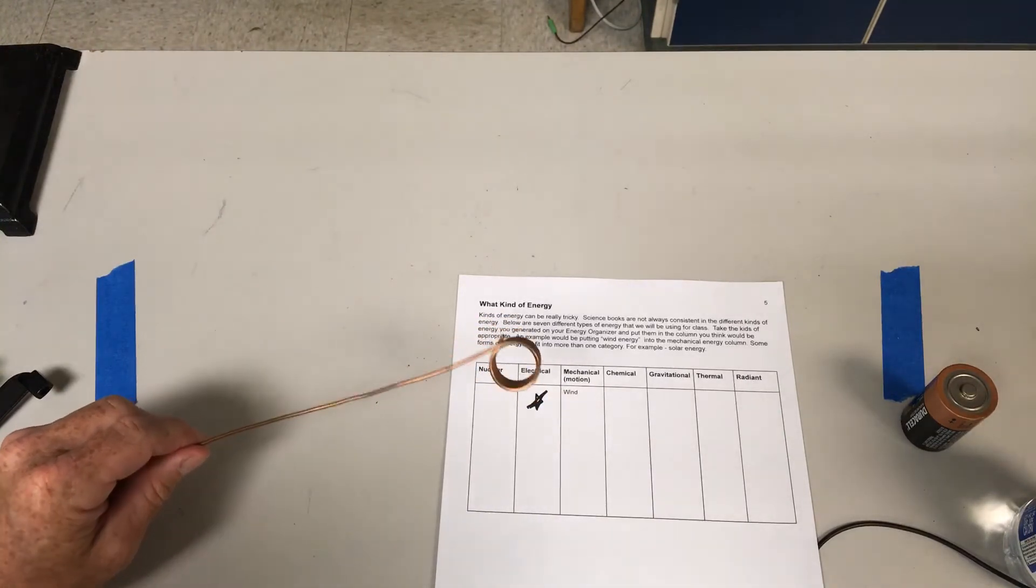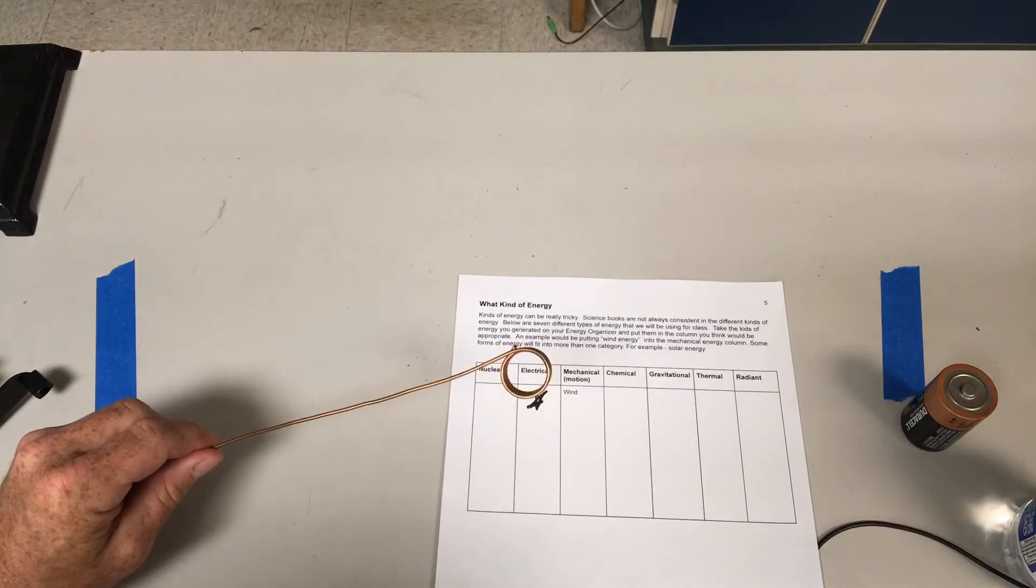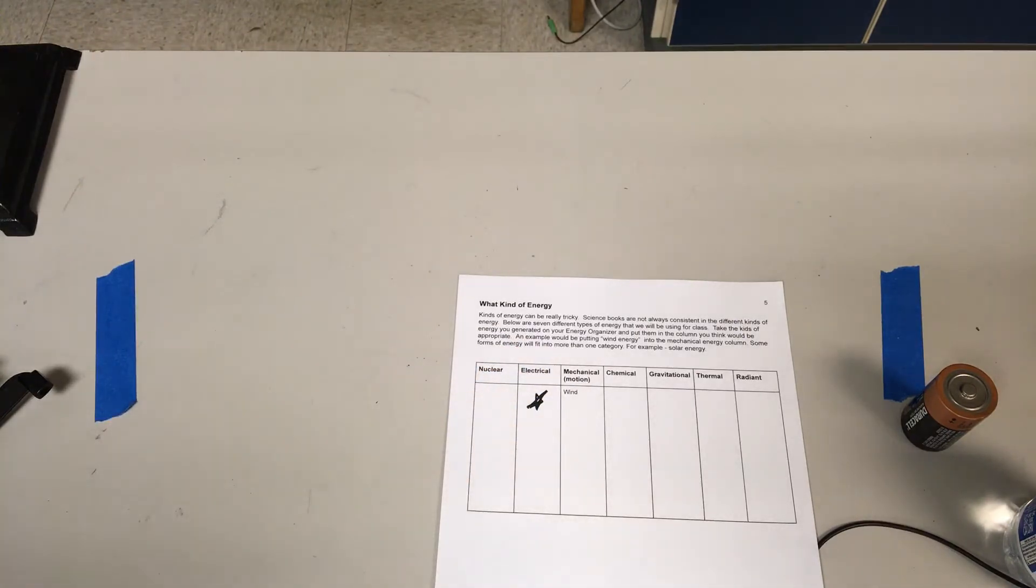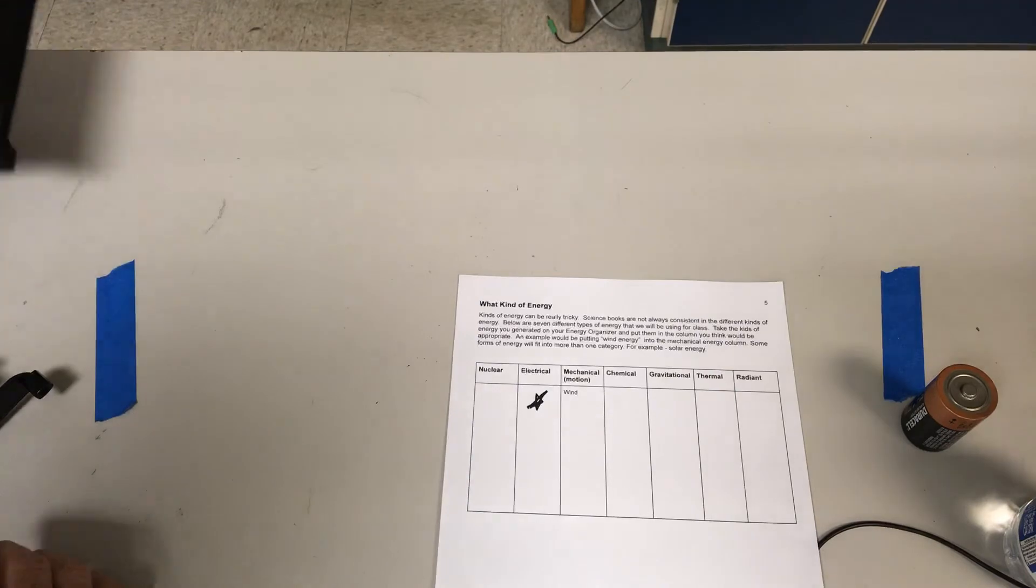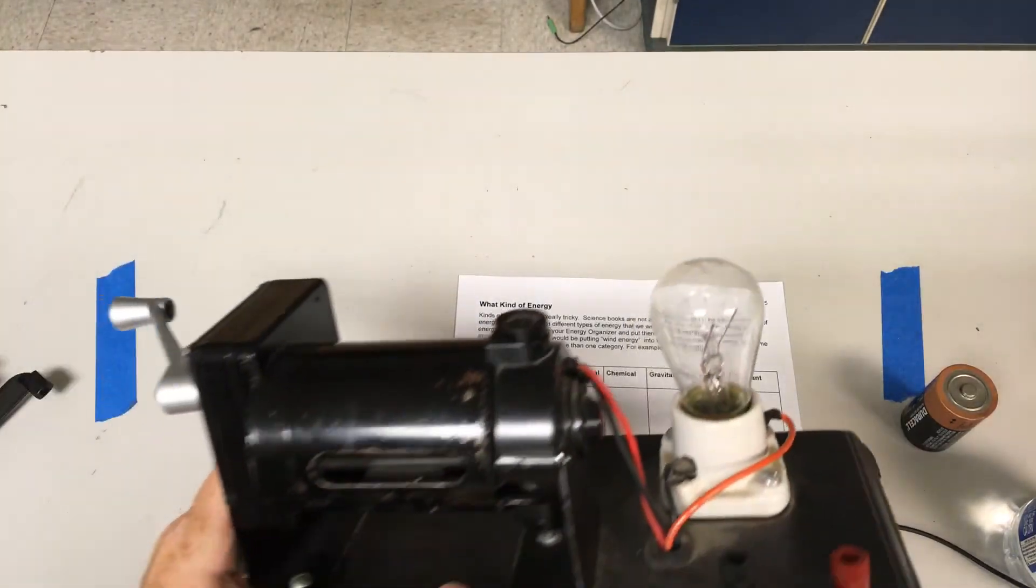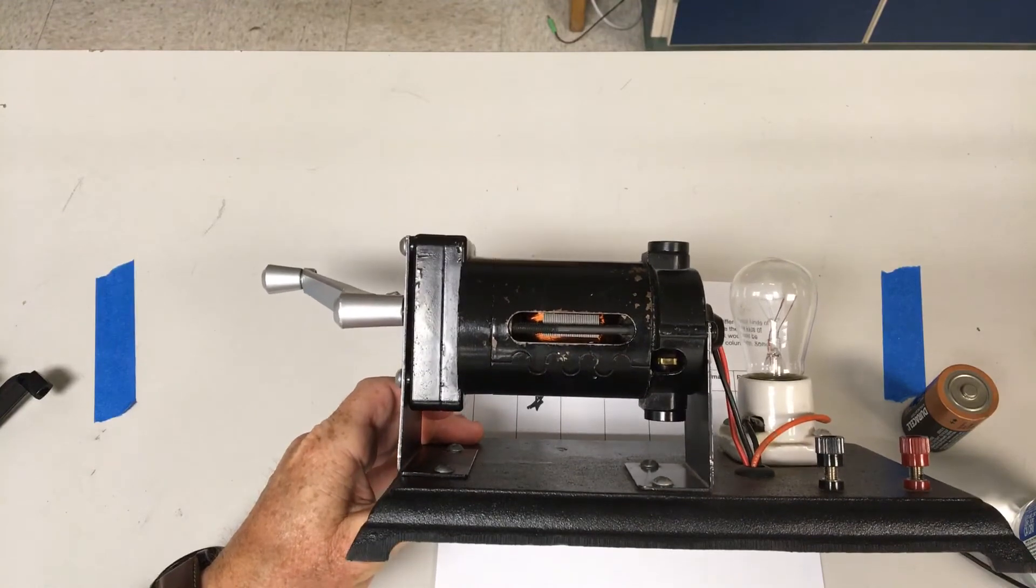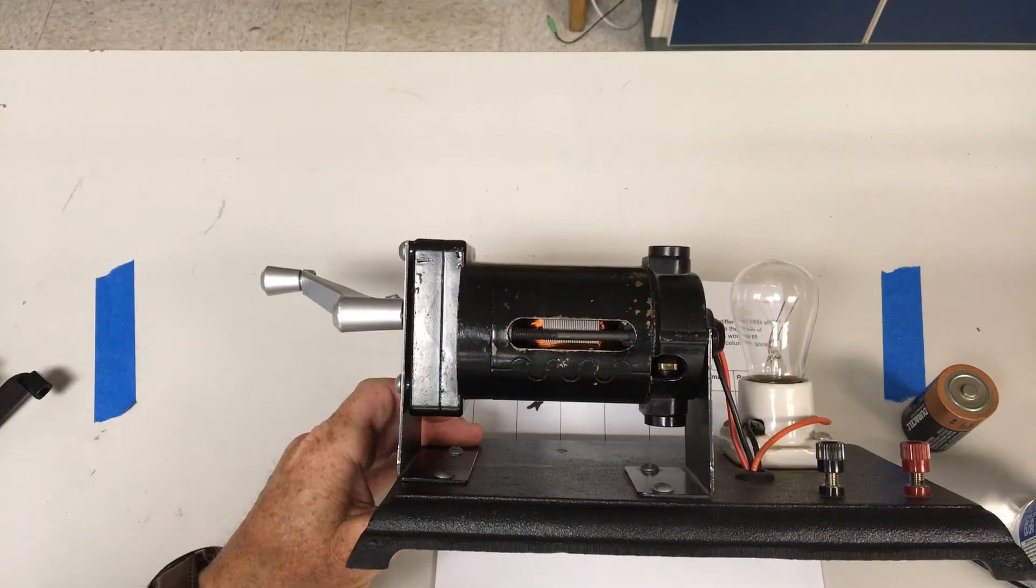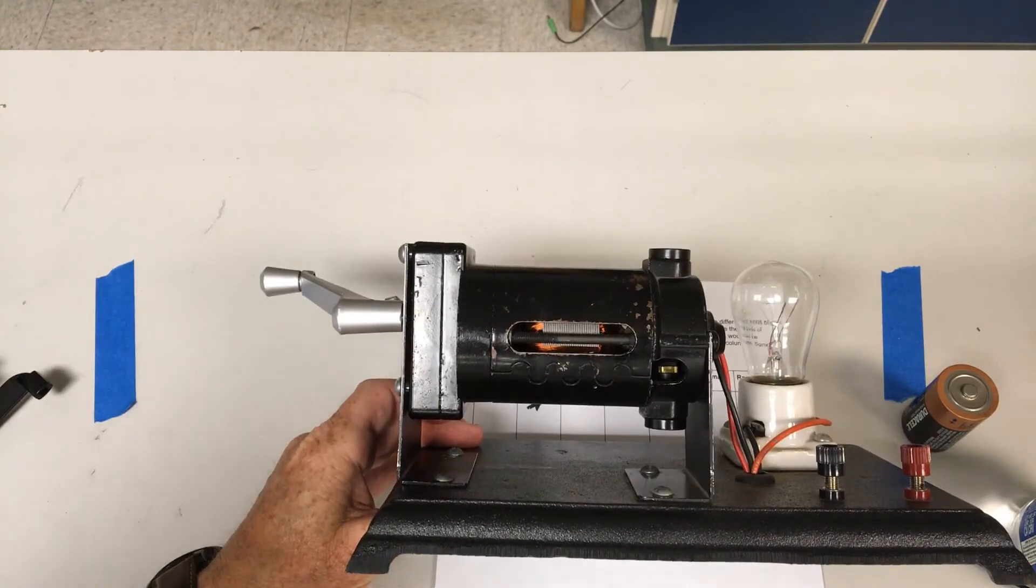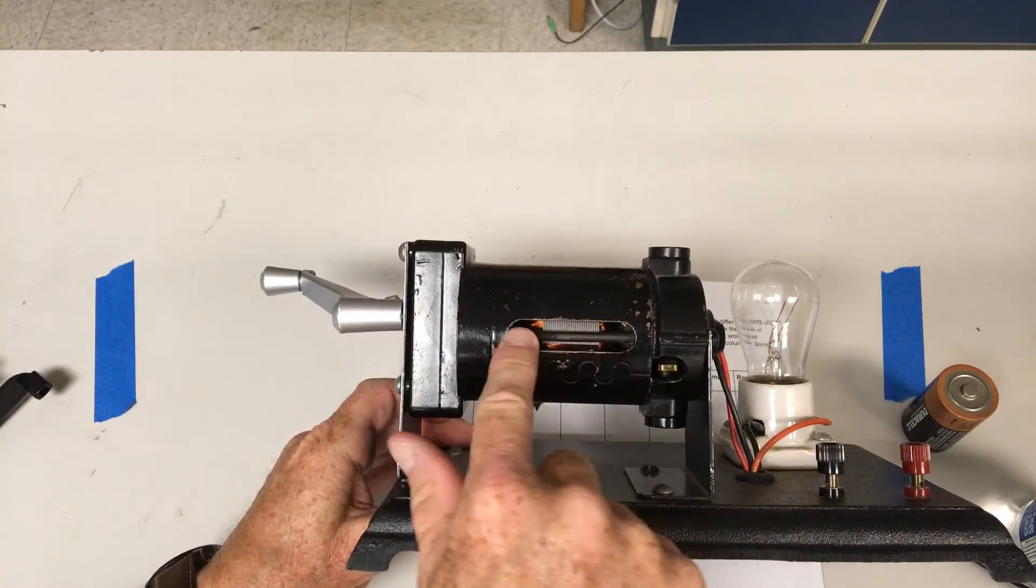He didn't really put it to work—that took another great scientist named Nikolai Tesla. He developed one of these, which are essential to life as we know it right now. This is a generator.